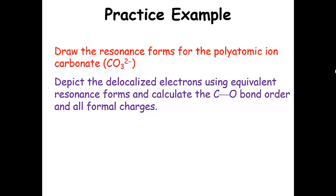Let's do a practice example. Draw the resonance forms for the polyatomic ion carbonate. It's going to have equivalent resonance forms — pause the presentation and try this. Depict those delocalized electrons using equivalent resonance forms. Then calculate the carbon-oxygen bond order and the formal charges on all of the atoms in the structure.